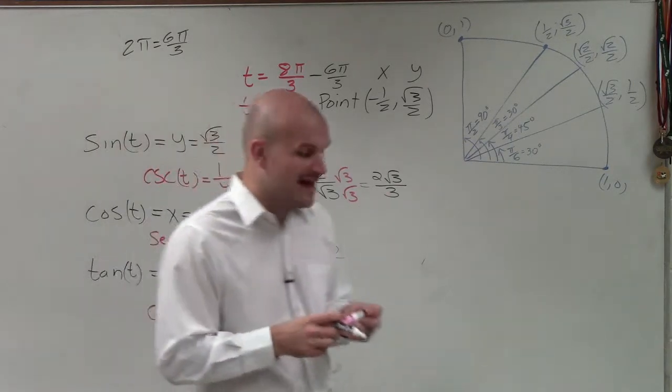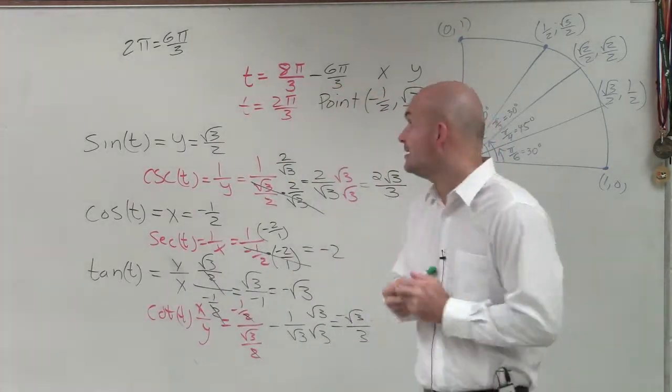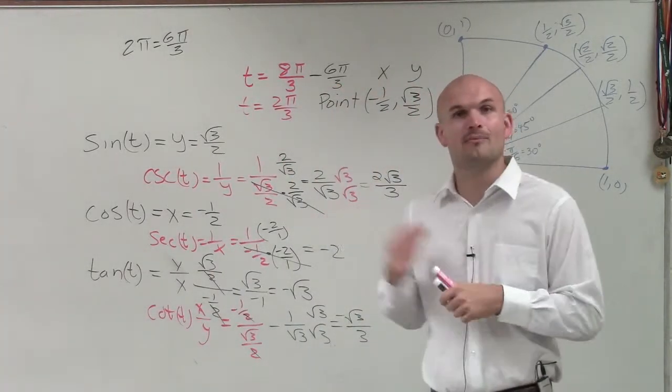So there you go, ladies and gentlemen. That is how you evaluate the six trigonometric functions when given an angle for a point on the unit circle. Thanks.